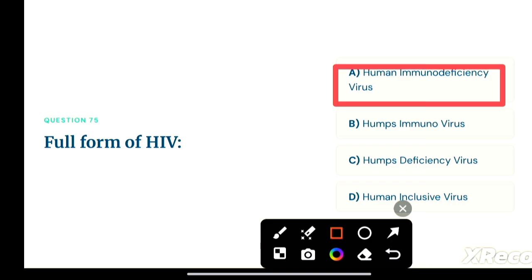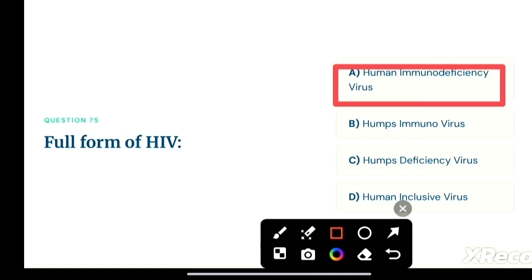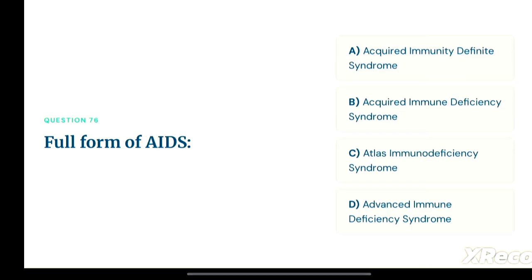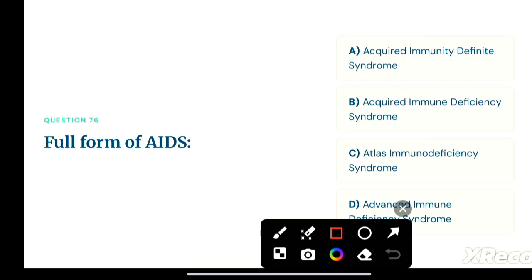Next question: the full form of AIDS — option A: acquired immunodeficiency syndrome, option B: acquired immunodeficiency syndrome, option C: atlas immunodeficiency syndrome, option D: advanced immunodeficiency syndrome. The correct answer is acquired immunodeficiency syndrome.